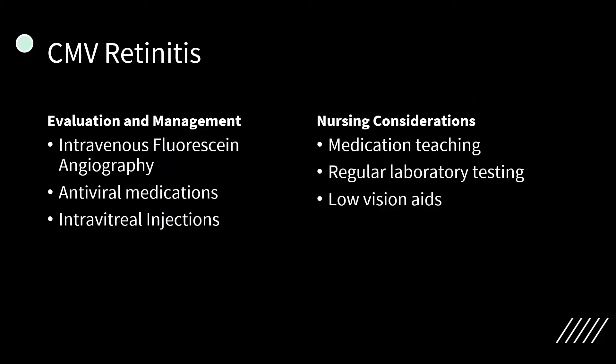Diagnostic evaluation for CMV retinitis includes direct and indirect ophthalmoscopy and intravenous fluorescein angiography. Antiviral medications do not eradicate the virus from the eye but help manage the disease. Medications such as ganciclovir, foscarnet, cidofovir, and valganciclovir are commonly used. Ophthalmic treatments include intravitreal injection or implant, vitrectomy, silicone oil, and retinal detachment repair. Untreated CMV may progress to blindness and bilateral loss in 25% of cases.